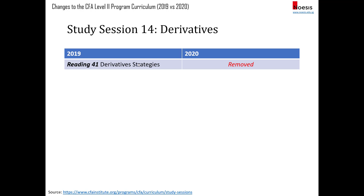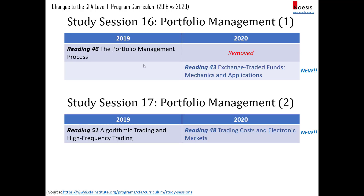For portfolio management, they've removed reading 46 on the portfolio management process and added reading 43 on exchange traded funds — mechanics and applications. They've also removed reading 51 on algorithmic trading and HFT, replacing it with a new reading on trading costs and electronic markets, which combines algorithmic trading with execution costs such as effective spreads, VWAP, and implementation shortfall.